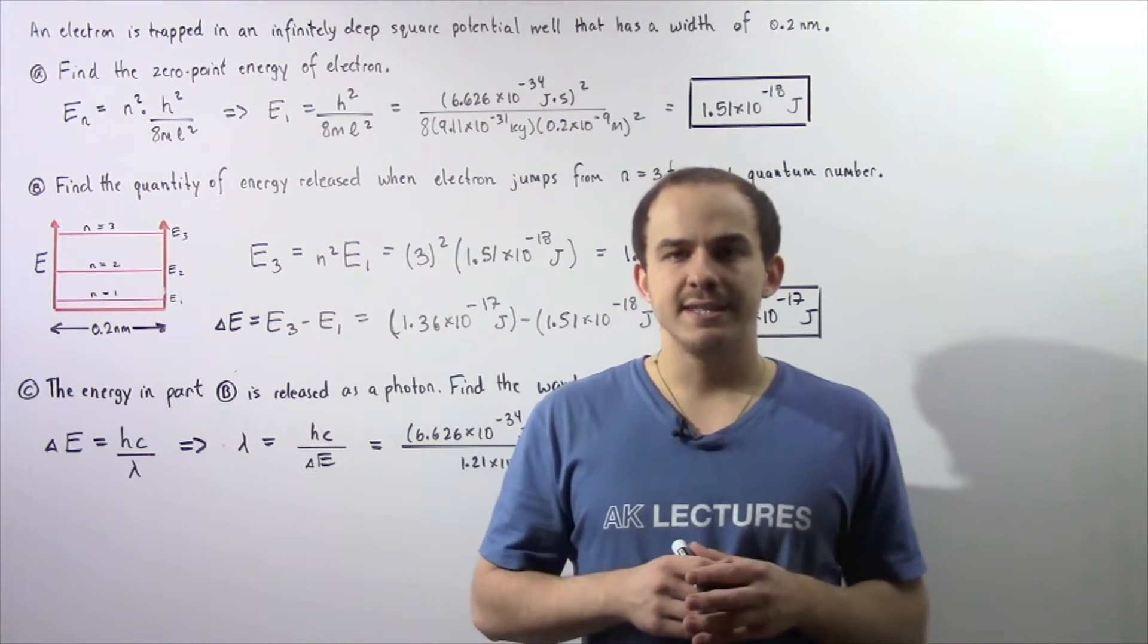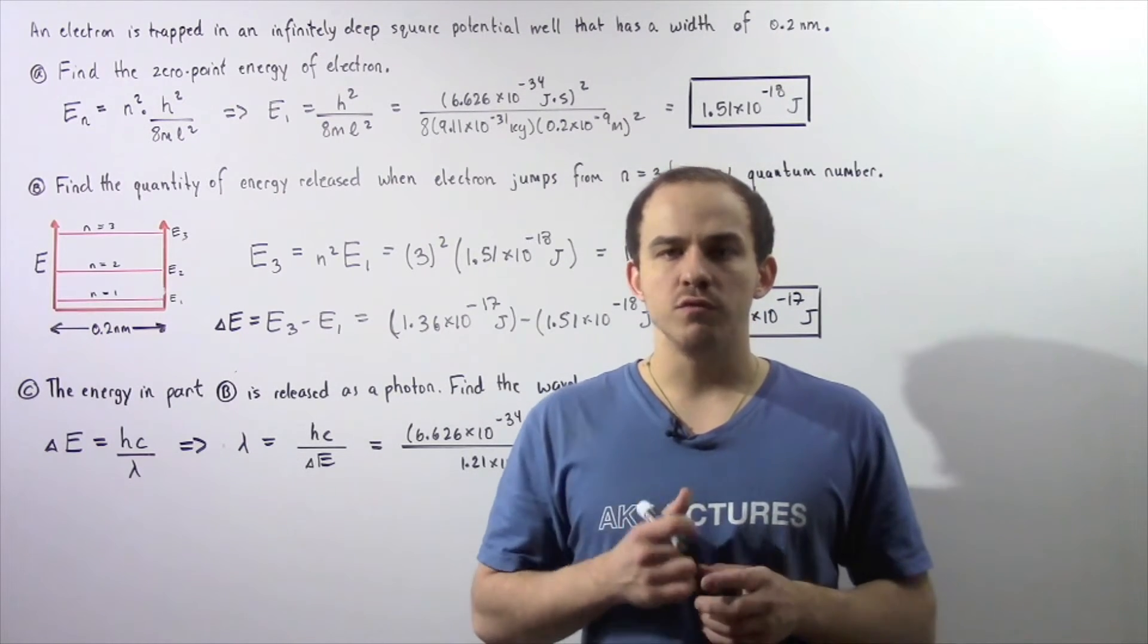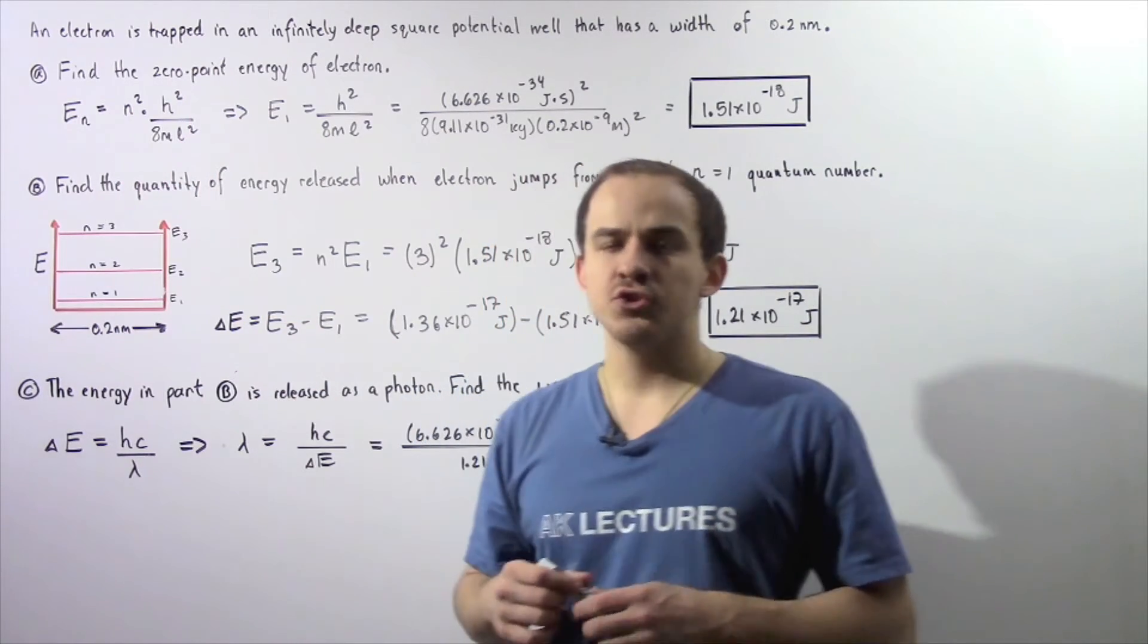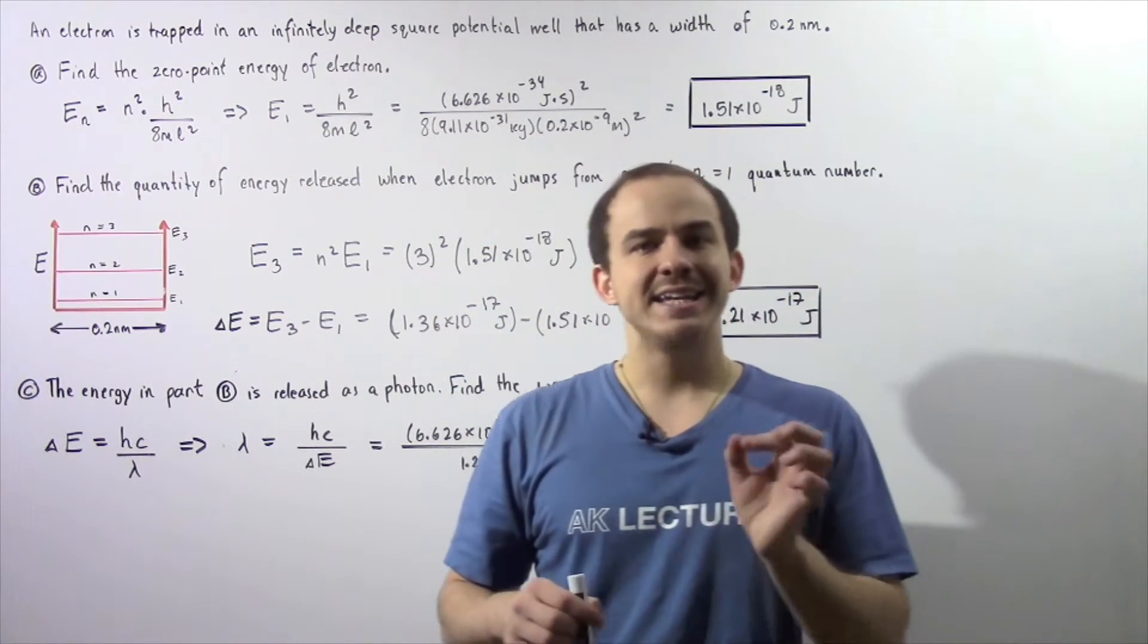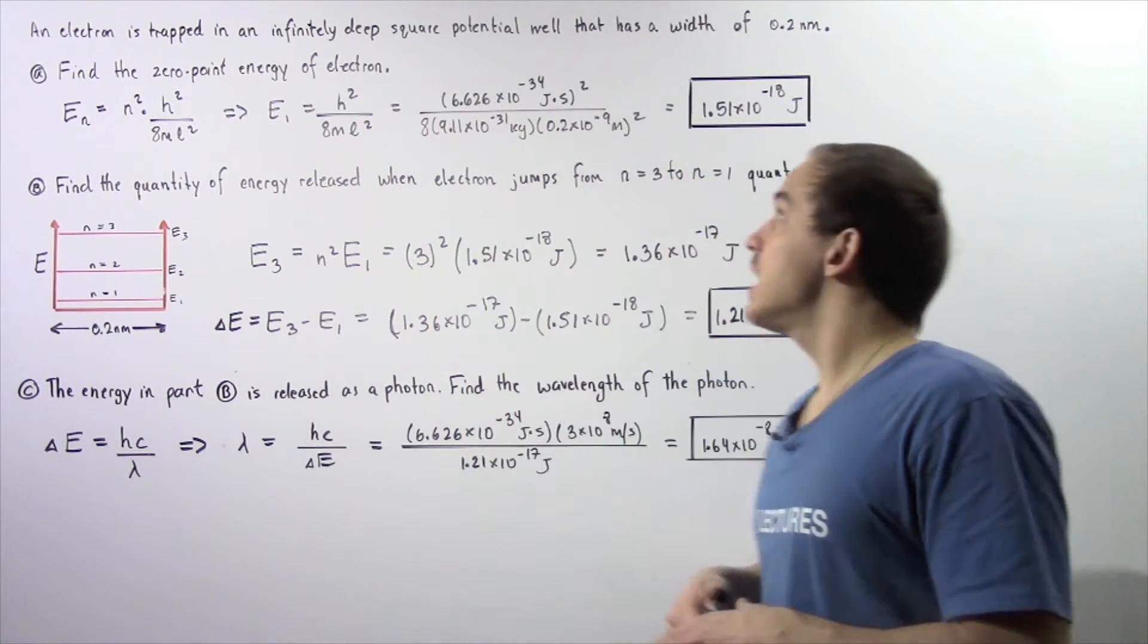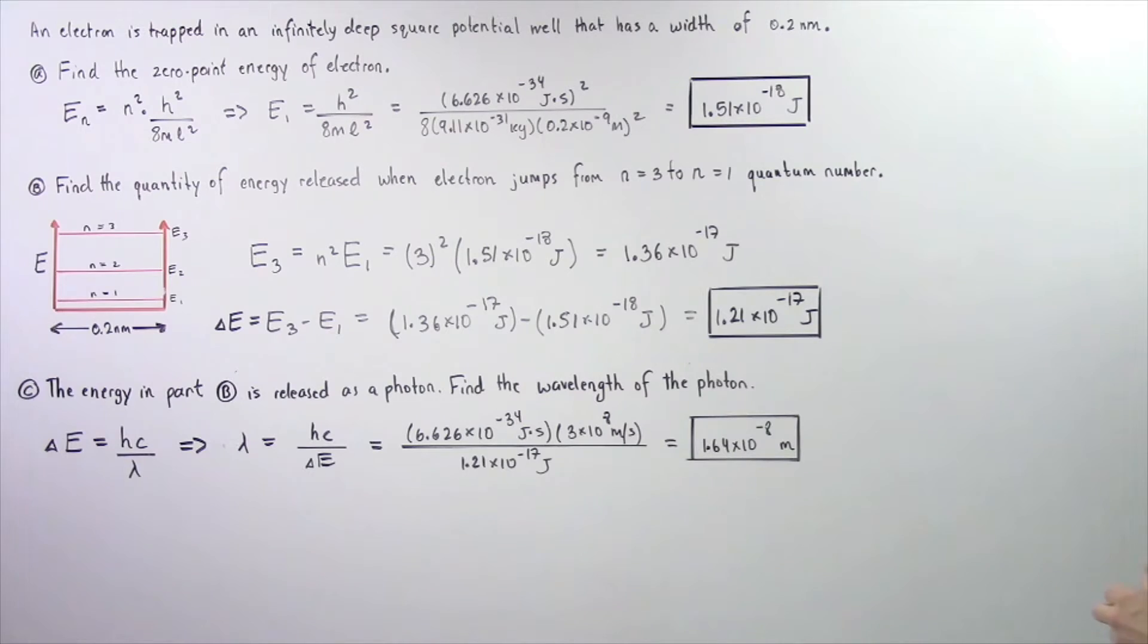Let's continue solving examples of particles moving inside rigid boxes. Let's suppose we have an electron that is trapped inside an infinitely deep square potential well, our rigid box, that has a width of 0.2 nanometers.